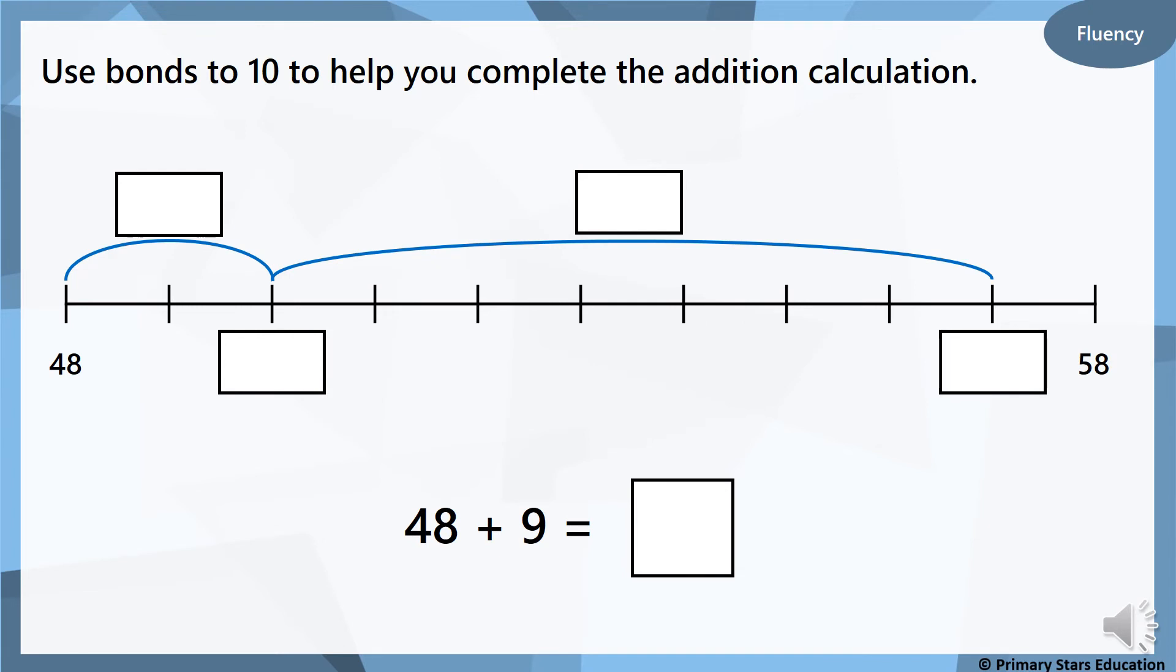Right, let's try a different one. We've got 48 add 9. So we're starting at 48. What's 8's number bond to 10? It is 2. So we're going to add on 2. So 48 add 2 takes us to 50.